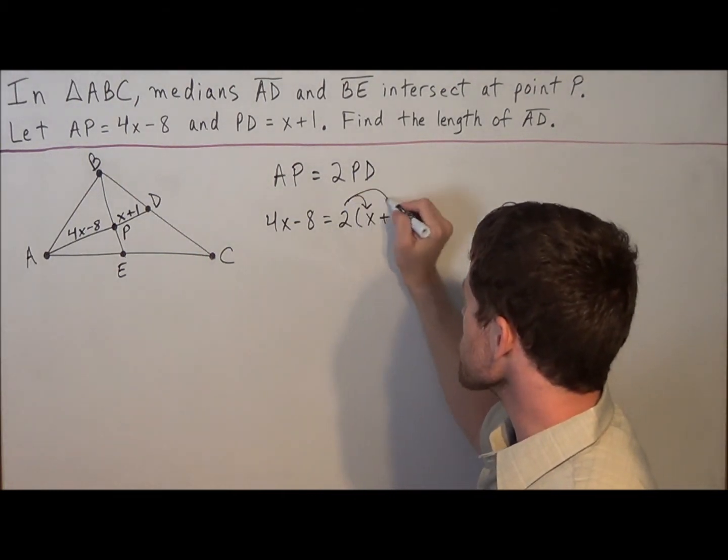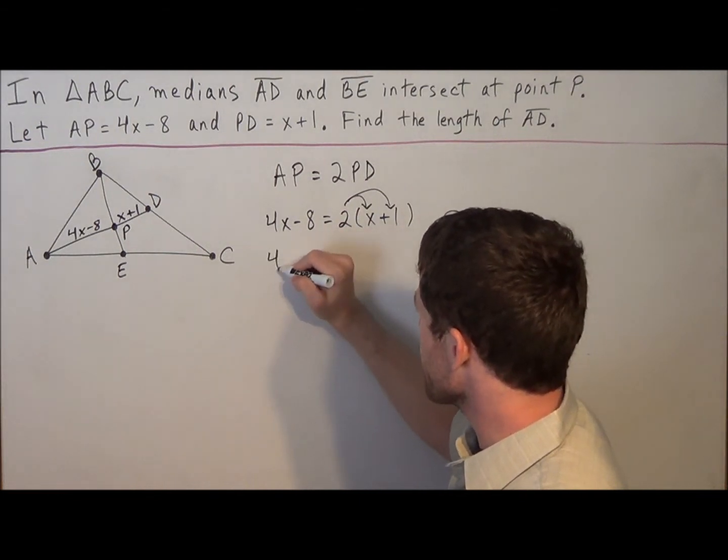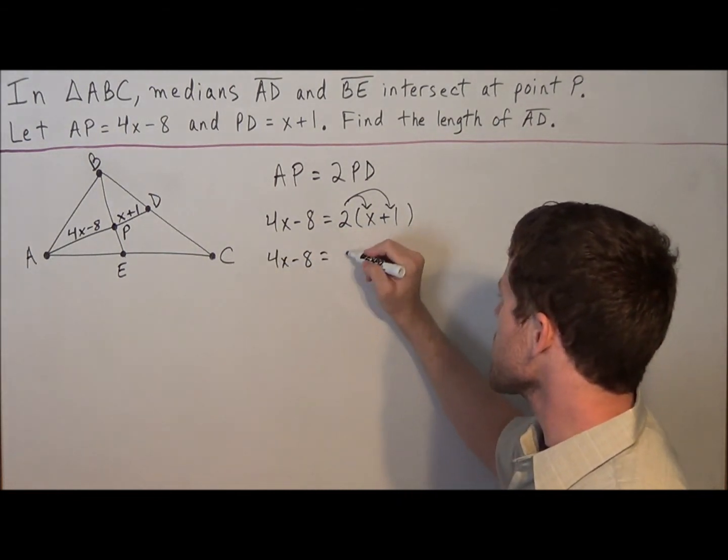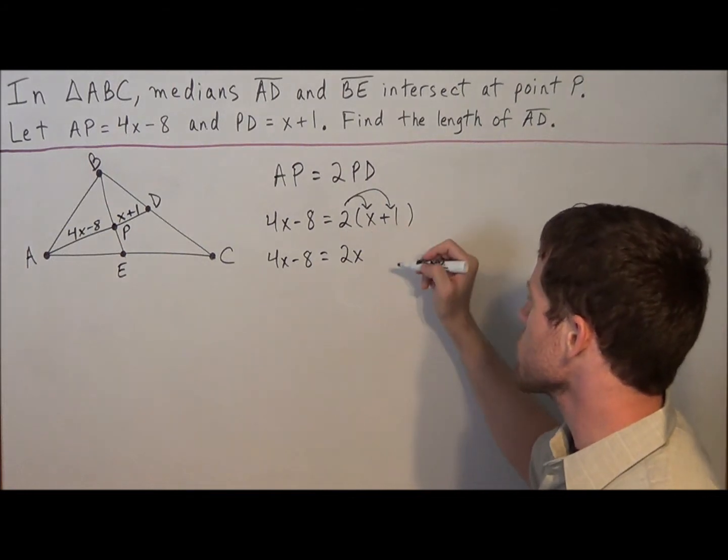Now we distribute. So for the next line, we have 4x minus 8 equals 2 times x is 2x. 2 times 1 is 2.